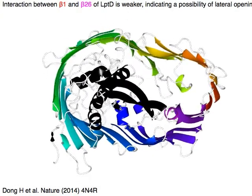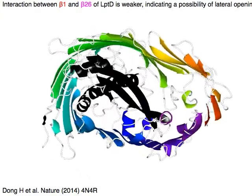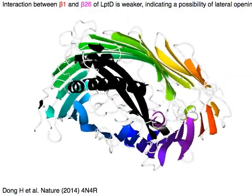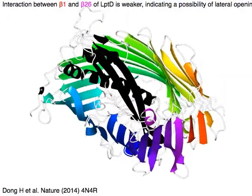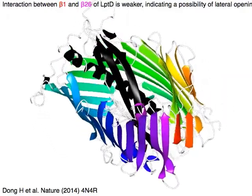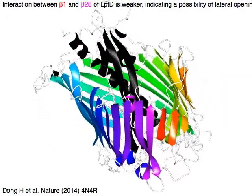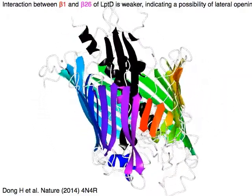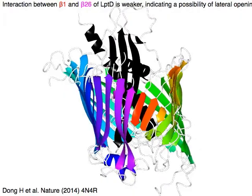The interaction between beta-1 in red and beta-26 in magenta of LPTD is weaker, indicating the possibility of a lateral opening.